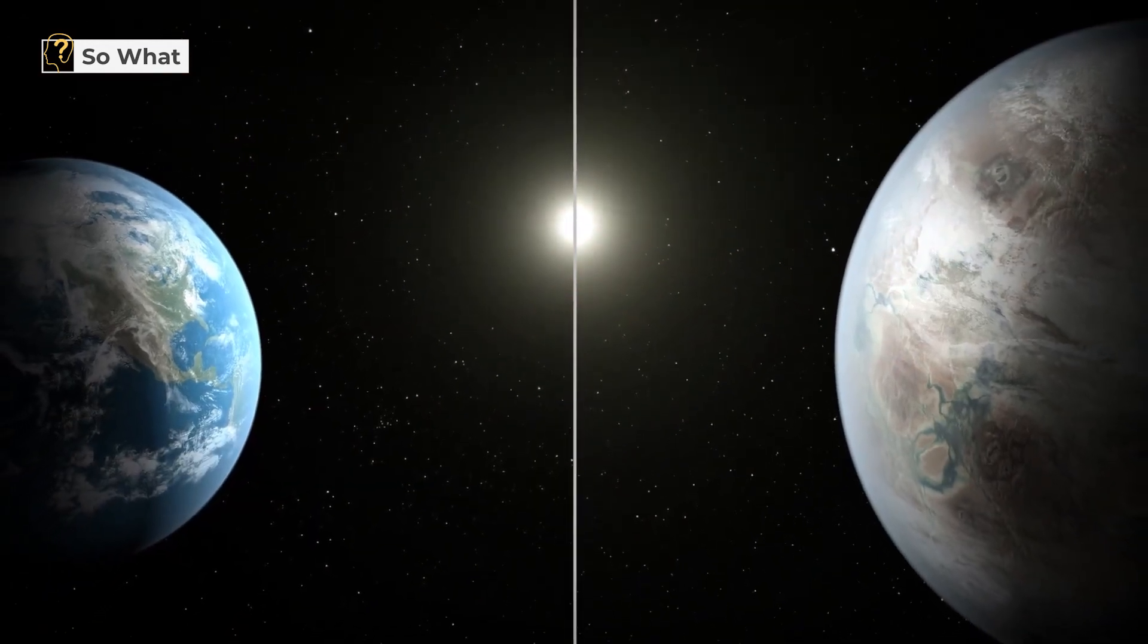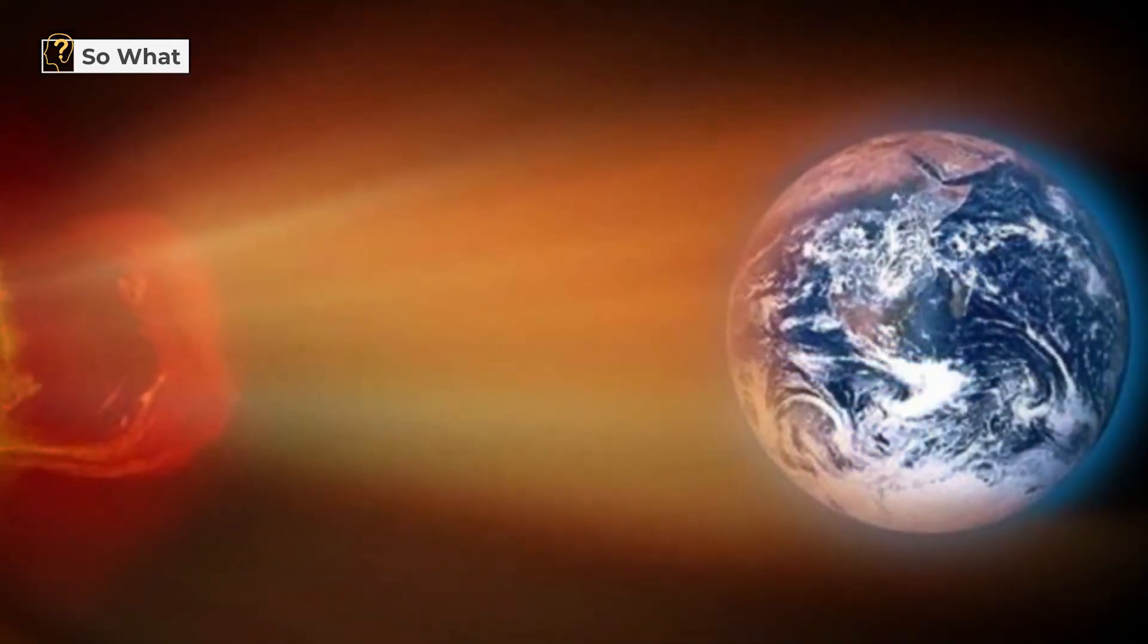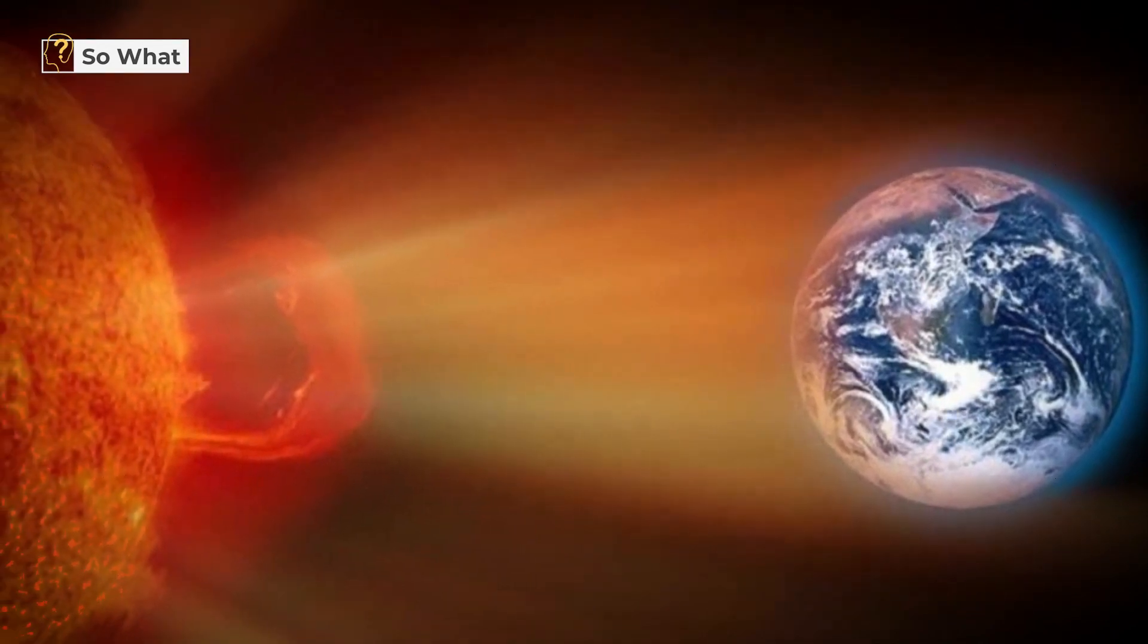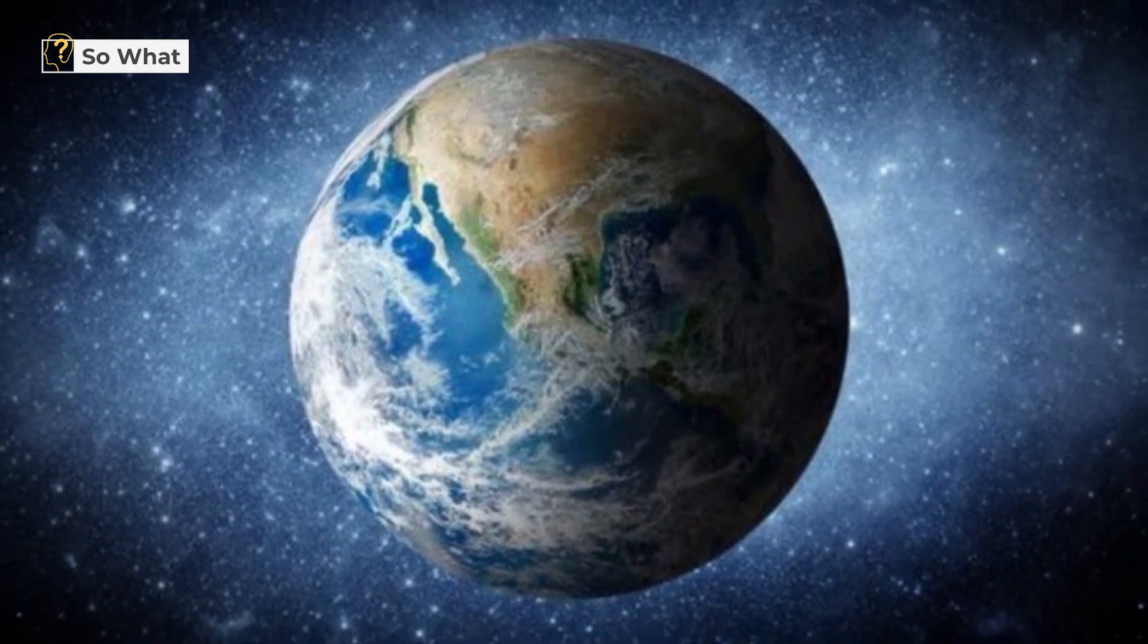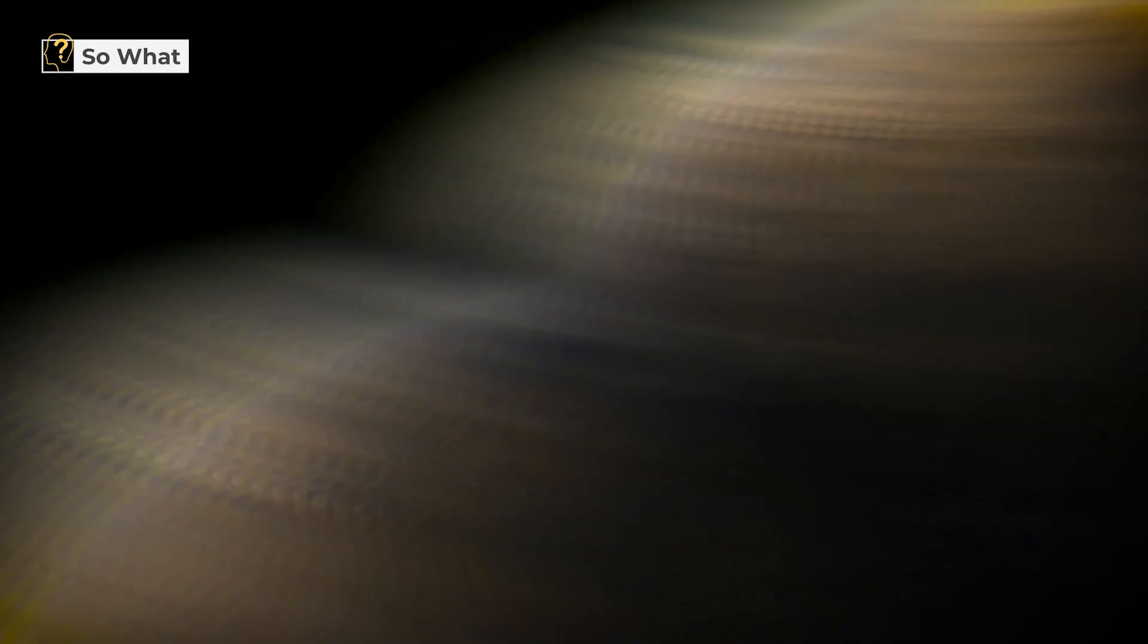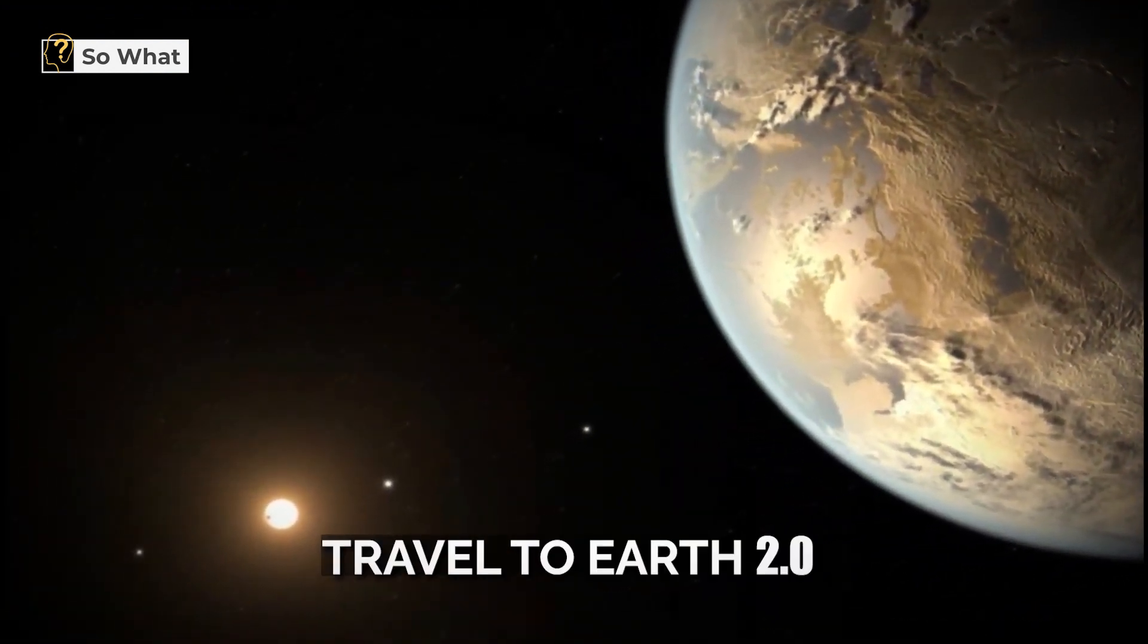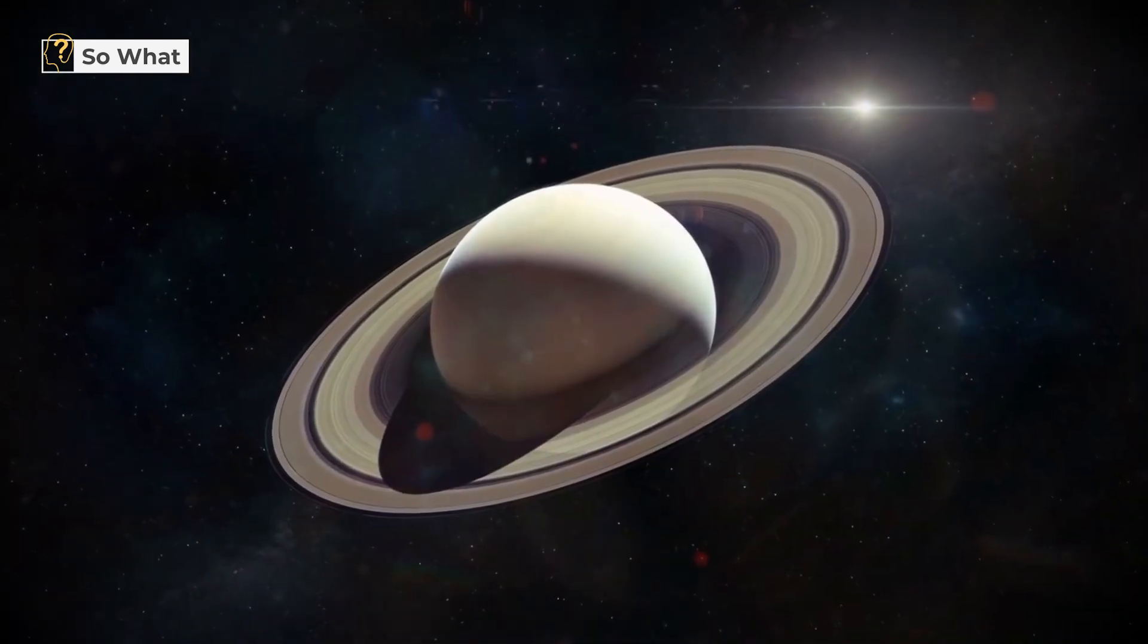What would happen if we decided that Kepler-1649c is worthy of becoming Earth 2.0? Earth 2.0 would take at least 2,000 years to achieve using present technology. We only know the size of this planet, its distance from its star, and the composition of its atmosphere because it is so far away. So, we can all pack our belongings and travel to Earth 2.0, only to realize that it's more like Neptune 2.0.